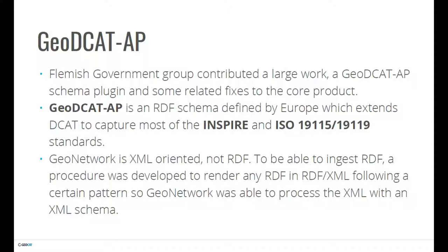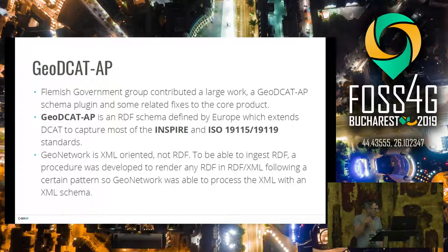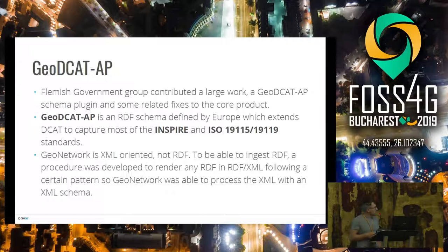The Flemish government developed a GeoDCAT-AP plugin. DCAT is a format used a lot in the open data community. However, it's a challenge for GeoNetwork because it's an RDF format and GeoNetwork is an XML-oriented product. There is an XML encoding of RDF, but for example it doesn't have order, whereas our XML world requires order in properties. Creating GeoDCAT-AP output is quite simple in GeoNetwork; however, importing it as JSON-LD or Turtle is quite hard. We made an intermediate wrapper that first converts the RDF object into an XML object with a certain order, so GeoNetwork is able to ingest that.